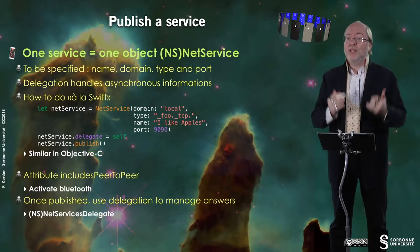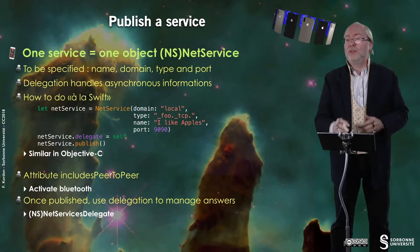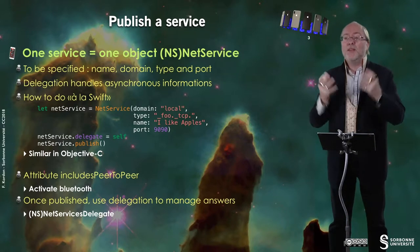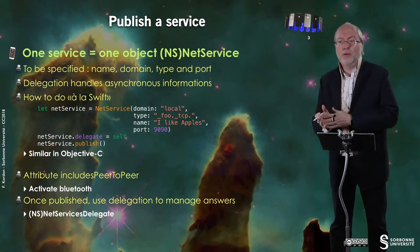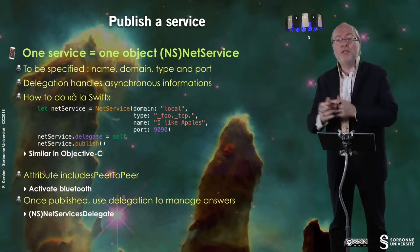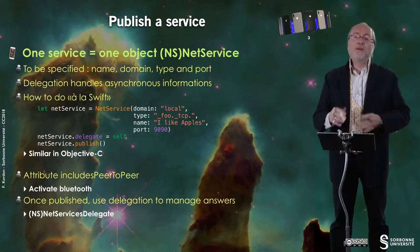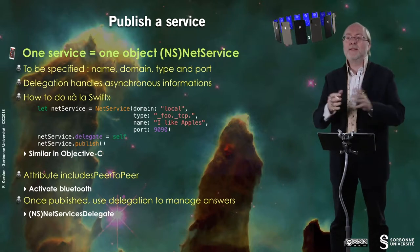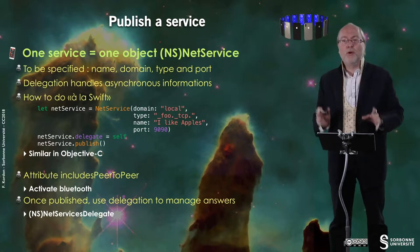Then you set the delegate for this NetService — here I do it with self, but it can be any object supporting the NetServiceDelegate protocol. And then I publish — I request my NetService to publish this service. It's very similar in Objective-C: you have NS-prefixed things, so NSNetService, NSNetServiceDelegate, but it works similarly.